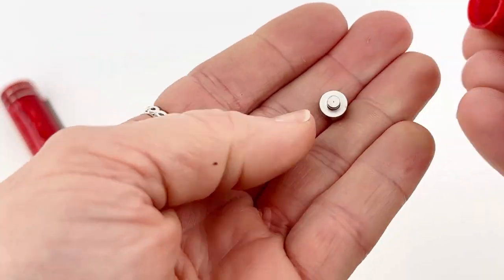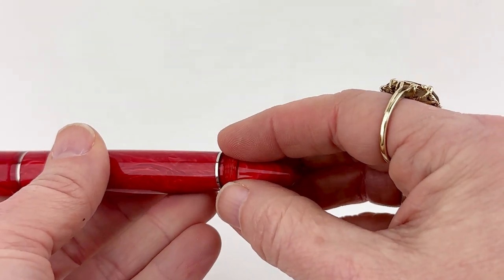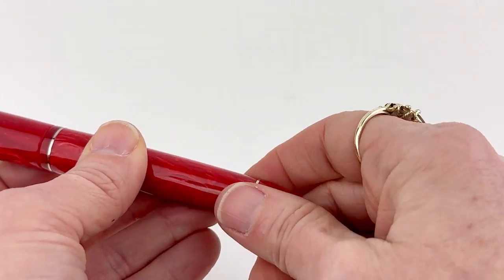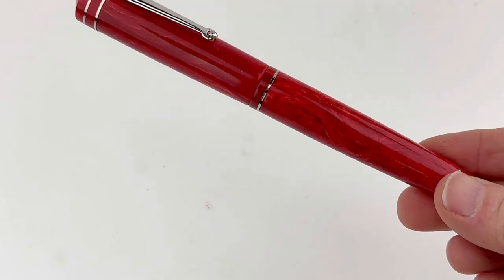The back end of the pen unscrews, and that is where you access the weight for your right balance system. The right balance system lets you put the weight where you want, at the back end or in the front.